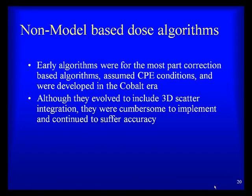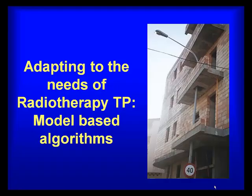In summary, the early non-model-based algorithms were mostly correction-based methods using effective path length, assuming charged particle electronic equilibrium, and were developed in the cobalt era at 1.25 MeV photon energies. Although they evolved to include 3D scatter integration like ETAR, they were cumbersome to implement and continued to suffer accuracy issues for more complex applications such as IMRT. This drove the development of the new generation of model-based algorithms.